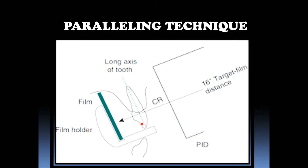These are very important. Now, whenever you place this film in a parallel direction, there is an increase in object-to-receptor distance, which may lead to higher image magnification and poor geometric sharpness. To compensate this, paralleling technique is used with a relatively long source-to-object distance. This is the source, this is the object. To compensate this, we are using a long source-to-object distance by using a long cone. Hence it is called a long cone technique.